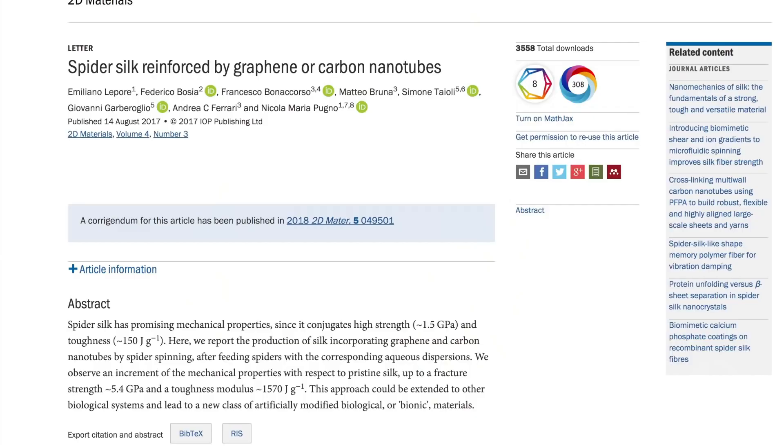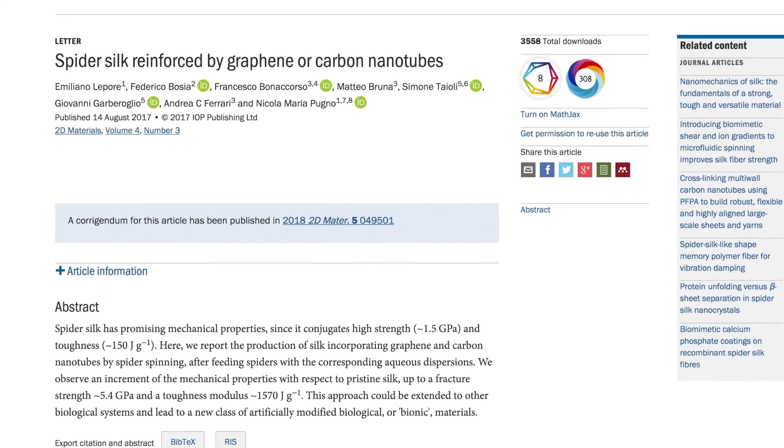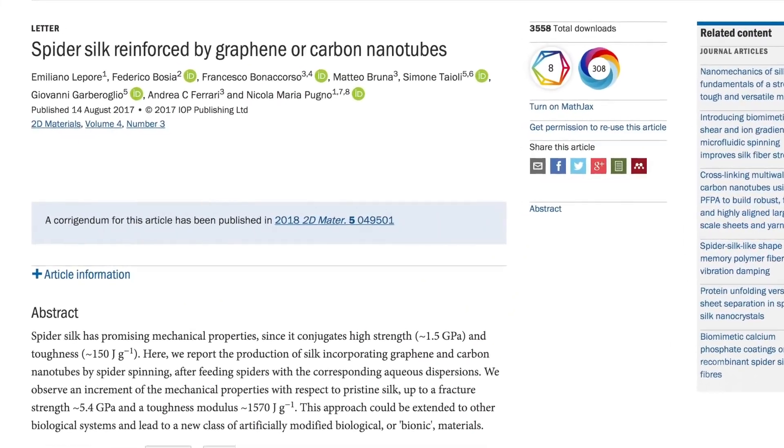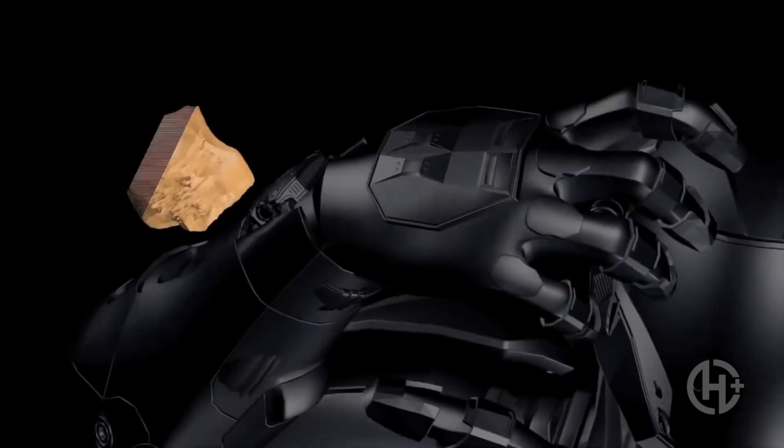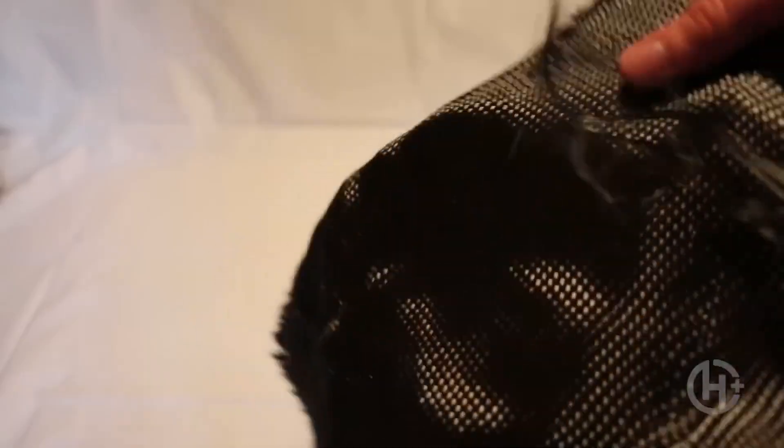Additionally, graphene-based clothing can be pretty tough. Silk spun by graphene-fed spiders is now officially one of the strongest fabrics on Earth. A new study published in the journal 2D Materials showed how adding graphene and carbon nanotubes to a spider's drinking water can make it five times stronger than conventional silk. This means that body armor made from graphene silk would be on par with the likes of pure carbon fiber and Kevlar vests.